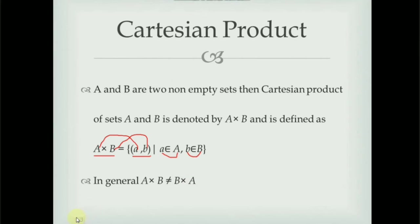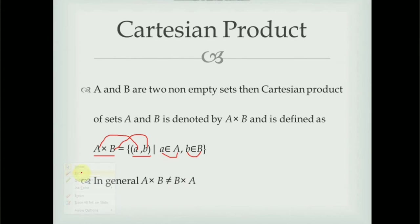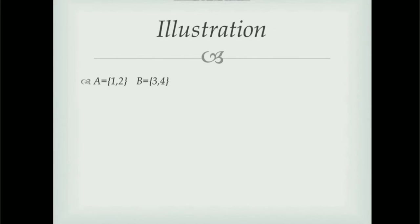A cross B contains all pairs of the form (a, b), whereas B cross A is the set of all ordered pairs where the first element belongs to set B and the second element belongs to set A, that is, of the form (b, a).